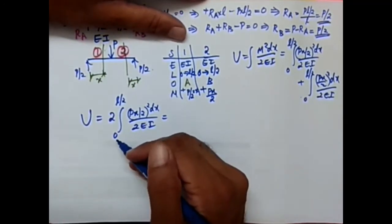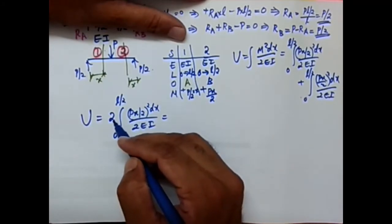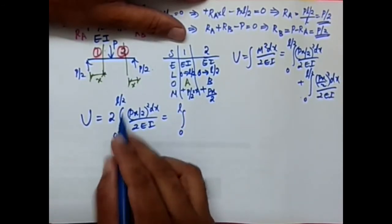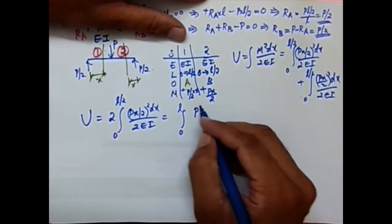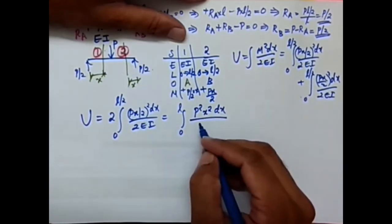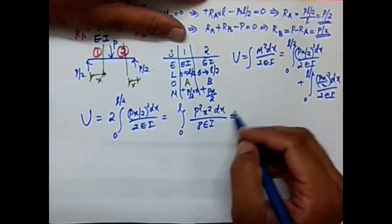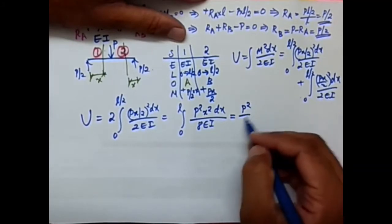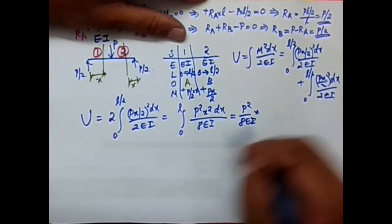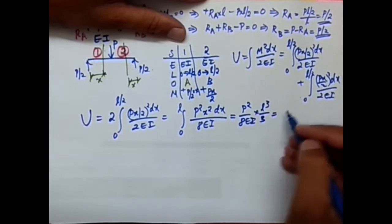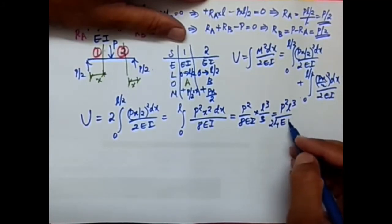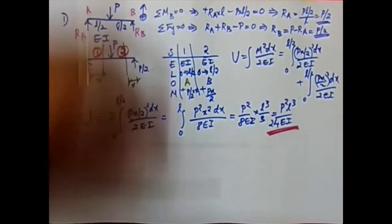Two times the integral from 0 to L/2 is equivalent to integrating from 0 to L. So inside we have P²X² dx / (4 × 2EI) = P²X² dx / 8EI. Taking out the constant P²/8EI, the integral of X² from 0 to L is X³/3 evaluated at L, giving L³/3. Therefore U = P²L³ / (3 × 8EI) = P²L³ / 24EI.